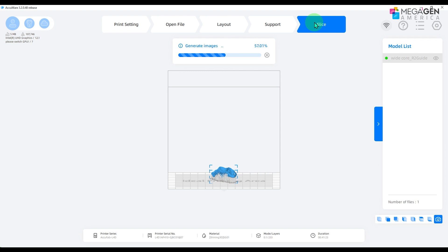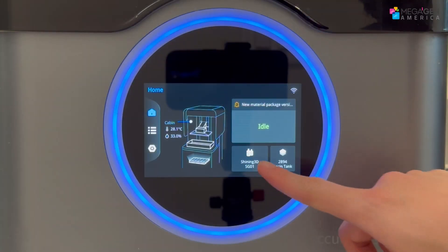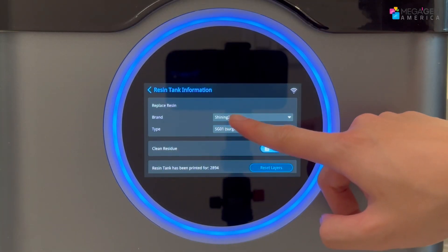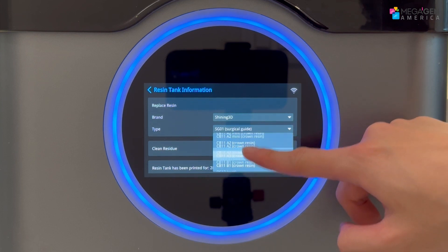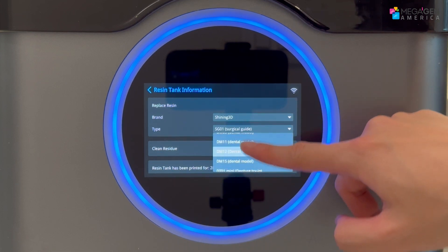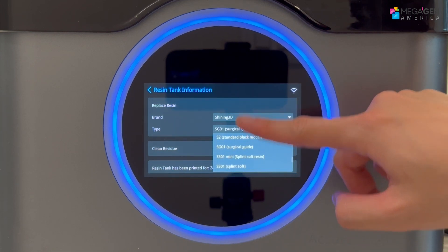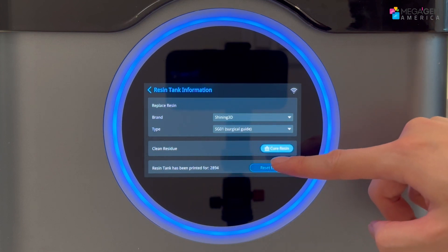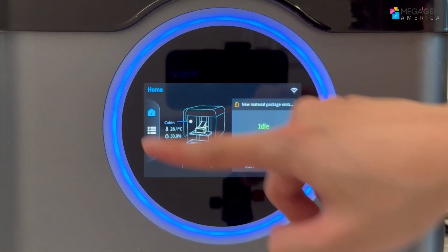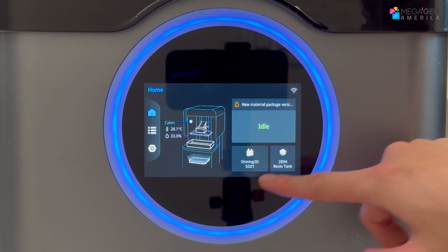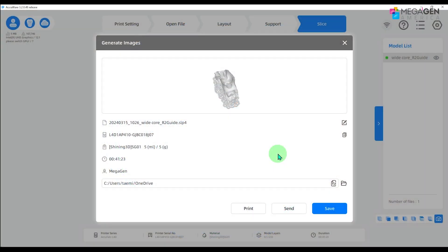Before you print, go to your printer and select the type of resin in the resin tank. Once the settings are confirmed, click print to proceed.